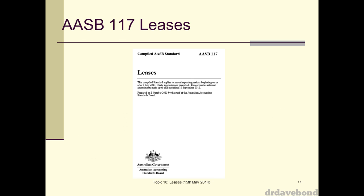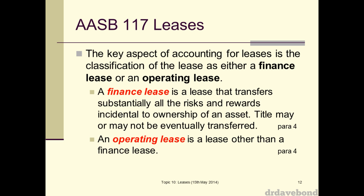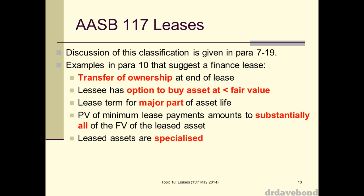So when do we have control and when do we have to capitalize? We have these two types of leases. A finance lease is defined as a particular thing, and an operating lease is just everything else — anything which is not a finance lease. A finance lease is one that transfers substantially all the risks and rewards incidental to ownership of an asset. You may or may not end up with ownership at the end, but the critical thing is that the risks and rewards of ownership have been transferred — you have basically got control of that asset. Paragraph 10 gives us a whole range of things which suggest a finance lease.